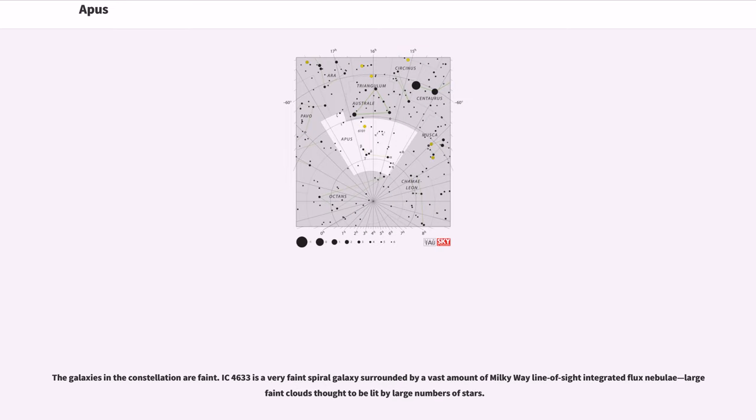The galaxies in the constellation are faint. IC 4633 is a very faint spiral galaxy surrounded by a vast amount of Milky Way line-of-sight integrated flux nebulae, large faint clouds thought to be lit by large numbers of stars.